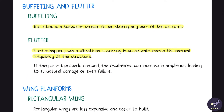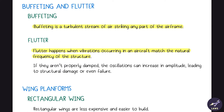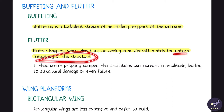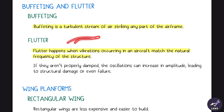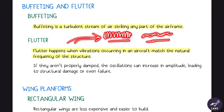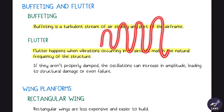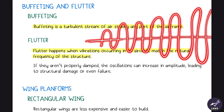Next is buffeting and flutter. Buffeting is turbulent airflow hitting any part of the airframe. Flutter happens when vibrations occurring in an aircraft match the natural frequency of the structure. If a gust comes and starts vibrating the aircraft and this vibration meets the natural vibrating frequency, we have resonance, and the amplitude of the vibrations will keep increasing.